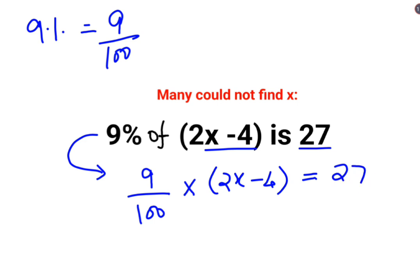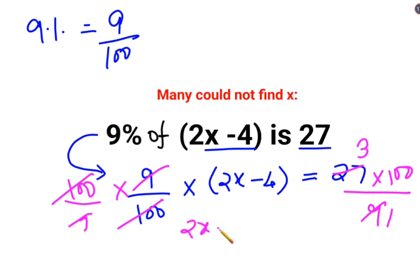Now in order to find the value of x, we will multiply both sides by 100 and divide both sides by 9. So this and this cancels. This and this also cancels. This is 1's and 3's. So I am left with 2x minus 4 equals 300.